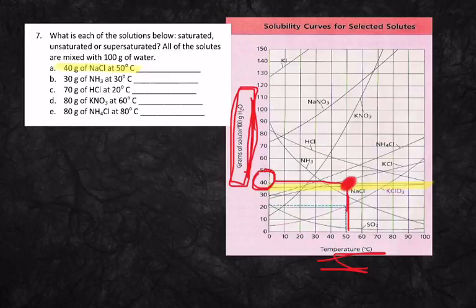And you know what? But that dot falls right on the line. And so my answer to this question, then, is going to be, it is a saturated solution. If the dot falls above the line, I would have a supersaturated solution. If the dot falls below the line, I would have an unsaturated solution.